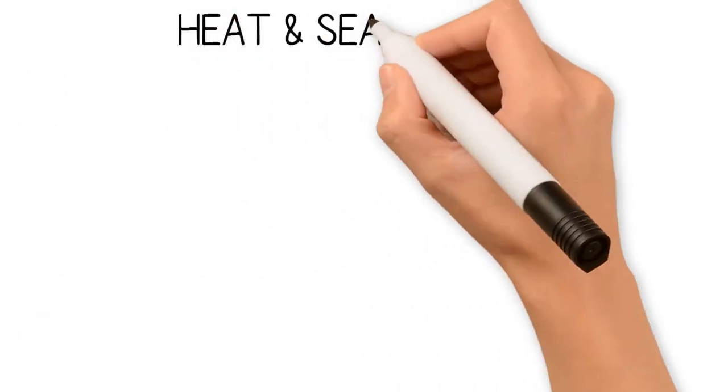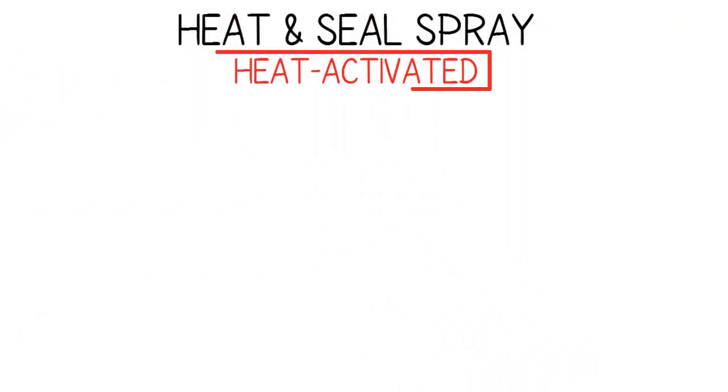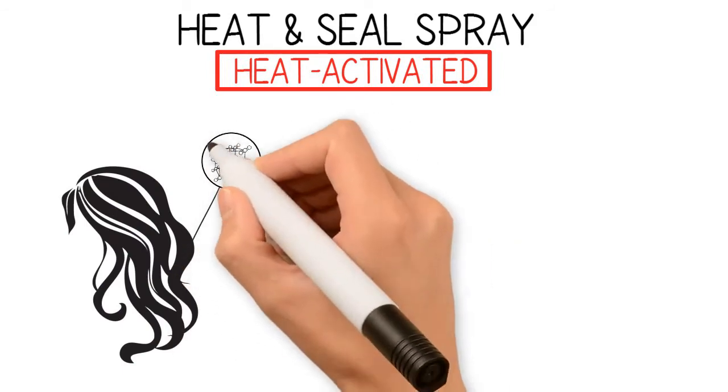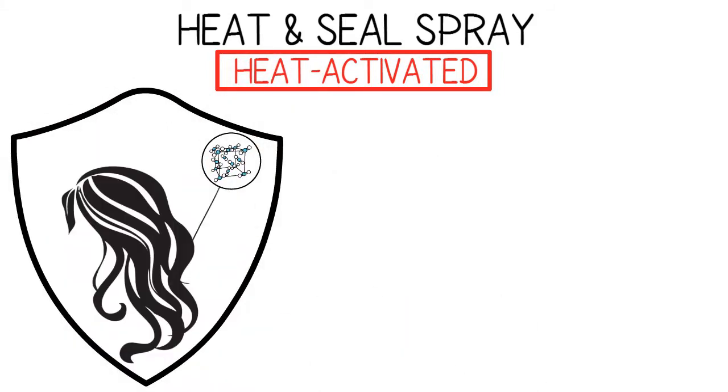Heat and Seal Spray is heat-activated and creates a cross-linking polymer around the hair to protect, seal, and greatly reduce or eliminate frizz.